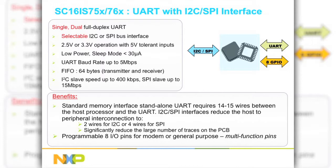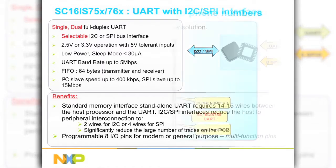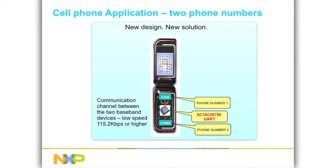This greatly reduces the number of traces on a PCB. A simple host interface comes in handy where space is tight. For example, one of the latest applications for UARTs is in cell phones with two phone numbers. These cell phones typically have a GSM baseband IC as well as a CDMA baseband IC, and a UART is used as a communication channel between the two. Other applications in the mobile market include a UART as the default interface for Bluetooth and GPS devices.